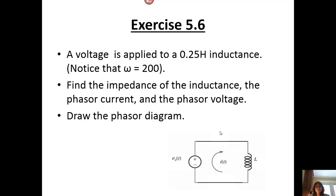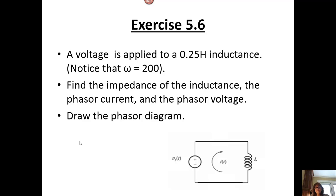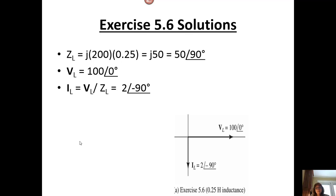Here we have an exercise. A voltage is applied to a 0.25 Henry inductance. Omega is 200. Find the impedance of the inductance, the phasor current, and the phasor voltage. The value of V sub s has omega equal to 200t. Therefore, Z sub L is J omega L, and plugging in the values we get J50. Remember J is our imaginary number. Here we have totally imaginary — all reactance.